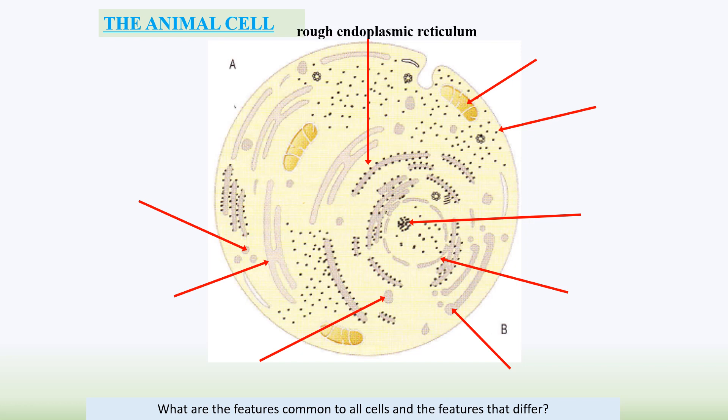Let's have a look at the answers. You've got rough endoplasmic reticulum, with ribosomes attached to it. The free ribosomes make housekeeping proteins for the cell, and the rough endoplasmic reticulum makes proteins that can be released out of the cell. The mitochondria carries out aerobic respiration.